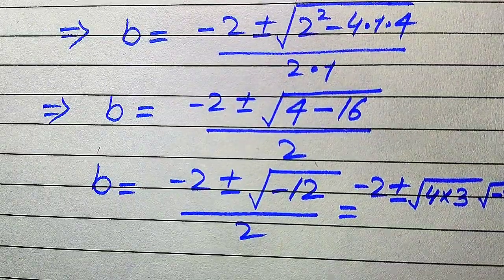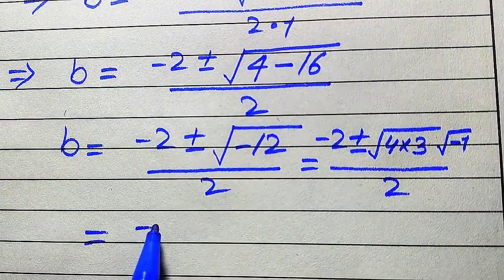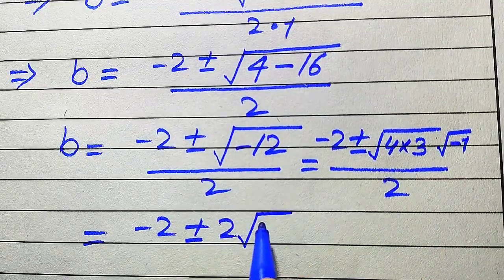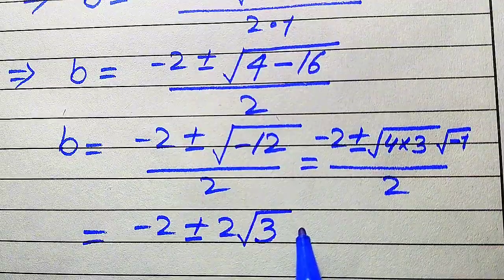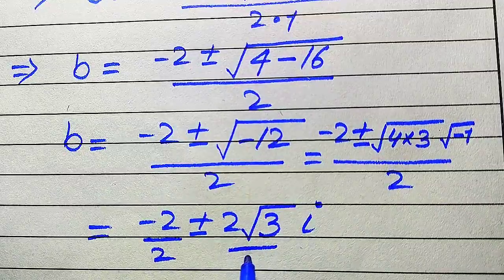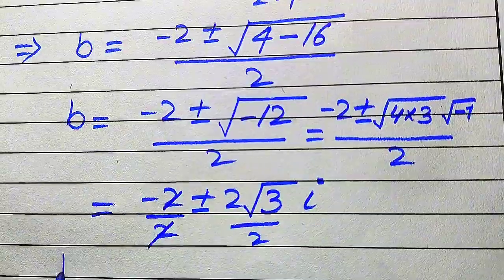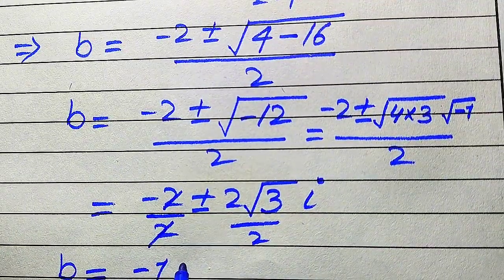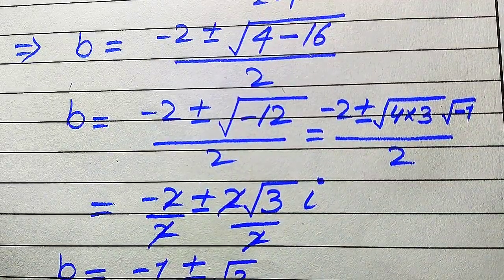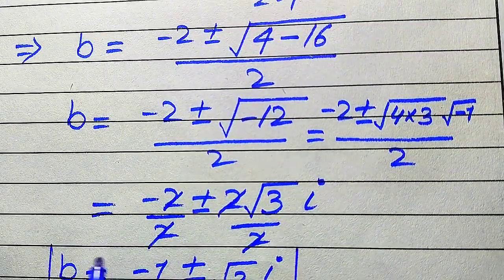So we have minus 2 plus or minus square root of 4 times 3 times negative 1, divided by 2. The square root of 4 becomes 2, the square root of negative 1 becomes iota (i). Breaking the fraction, these twos cancel out, and we get minus 1 plus or minus iota times square root of 3.